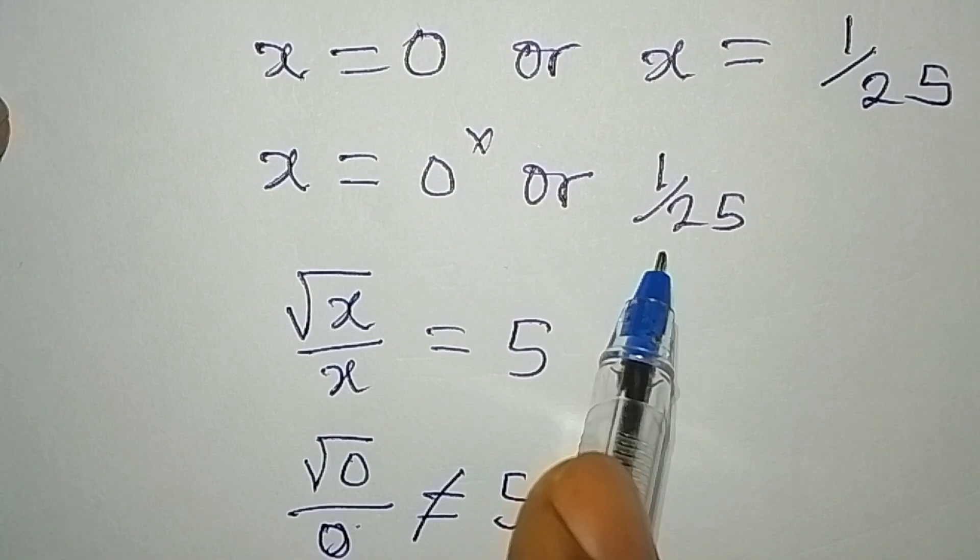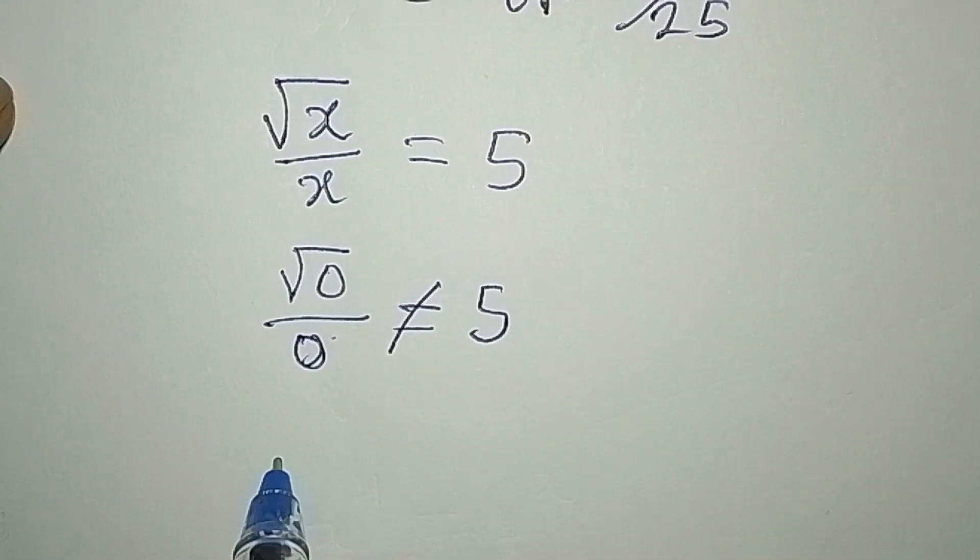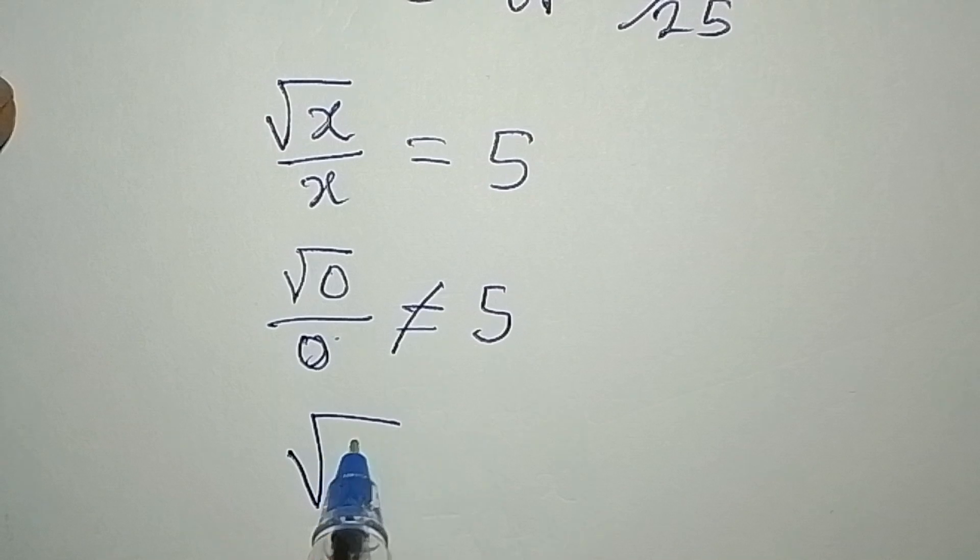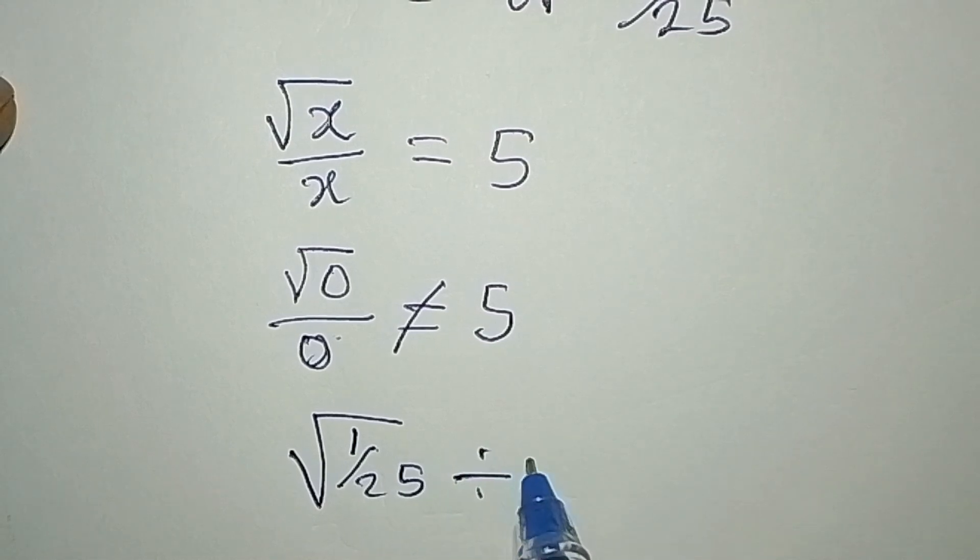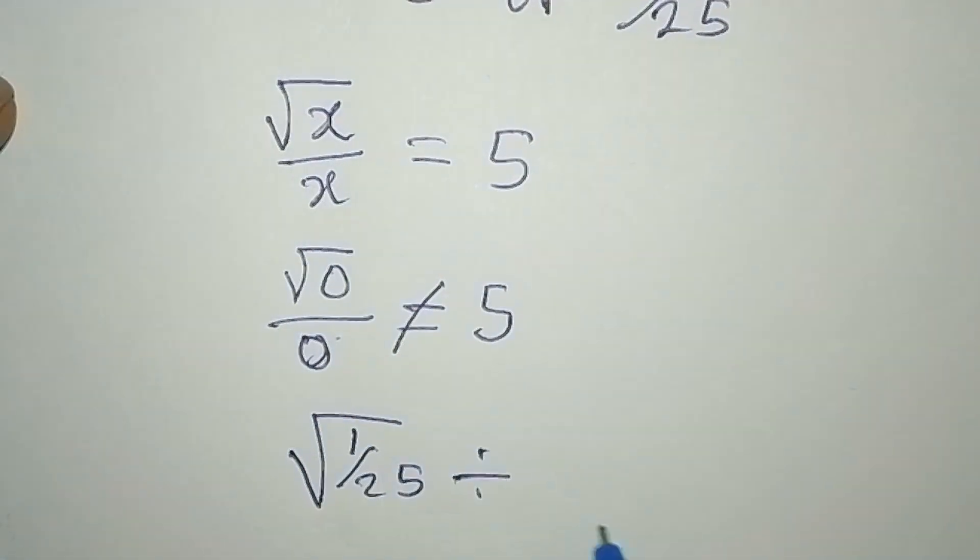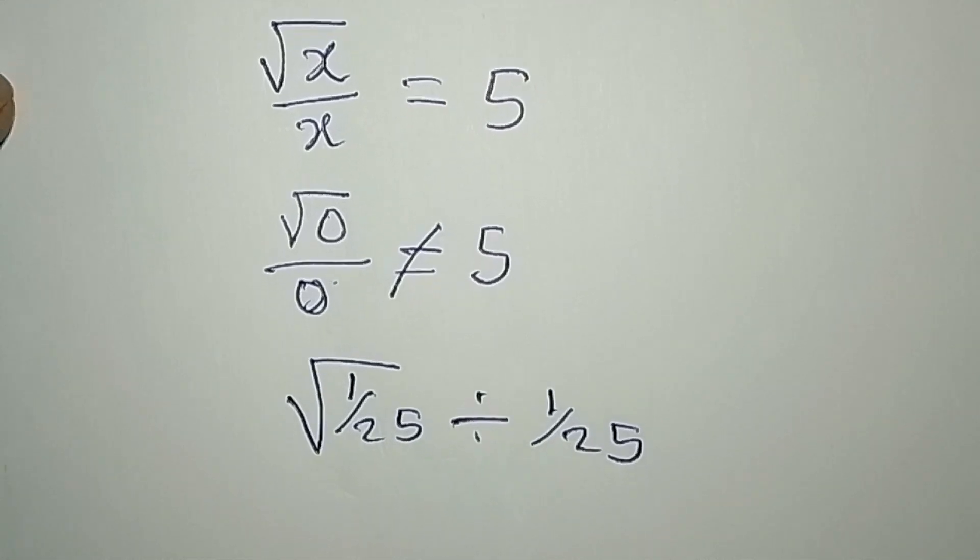Now let's work with x to be equal to 1 over 25. So that means we have square root of 1 over 25, divided by x, and the x is still 1 over 25. So do you think this will give us 5? Let's try.